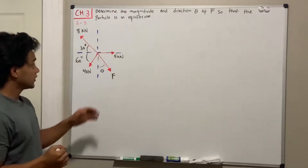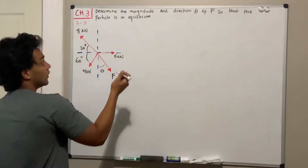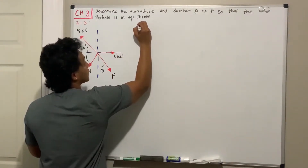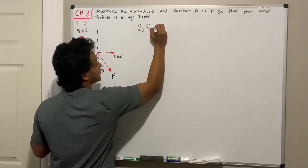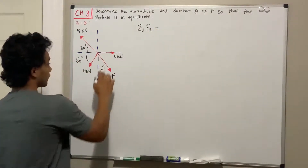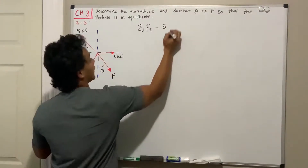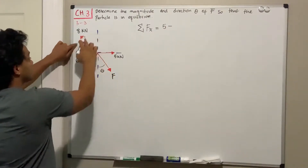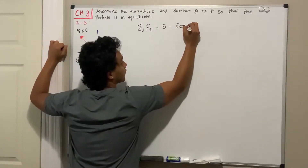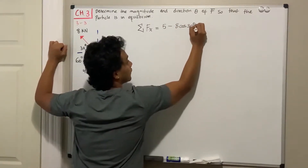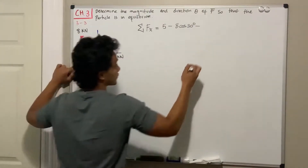In order to solve this, we're going to use the equilibrium equation. We're going to add all the forces in the x direction. We've got five kilonewtons positive, minus the eight kilonewtons multiplied by the cosine of 30 degrees — so eight cosine of 30 — minus the four kilonewtons multiplied by the cosine of 60.